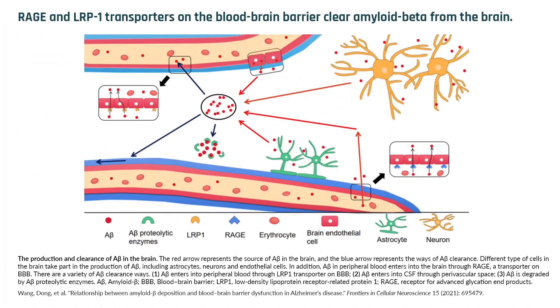It comes back to glucose, oxygen, but also amyloid. If you have a leaky barrier and vessels that are not functional, there are a few receptors — RAGE, LRP1, and others — and if they don't work properly, you won't be able to clear your waste from your brain while you sleep. You will then have a tendency to accumulate more amyloid and possibly develop plaques. So everything is interconnected.